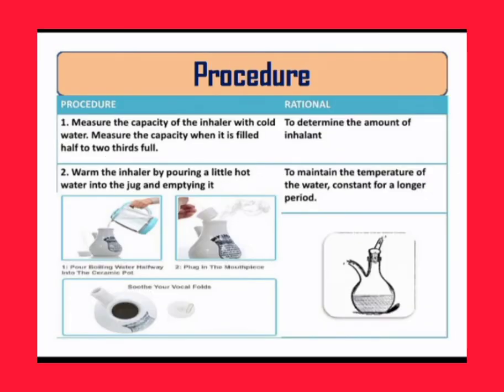Now we will see the procedure of the steam inhalation step by step with rationale. First, measure the capacity of the inhaler with cold water, measuring the capacity when it is filled half to two-thirds full. We have to measure the capacity of the inhaler with cold water and also measure when the jug is filled two-thirds with water.